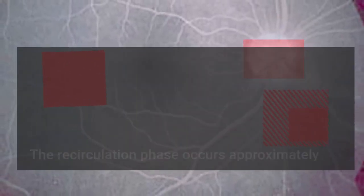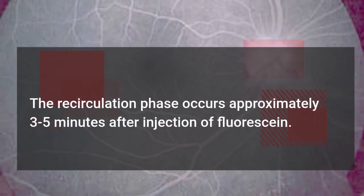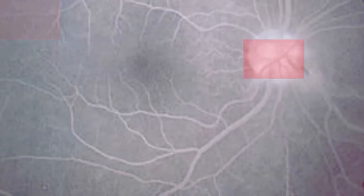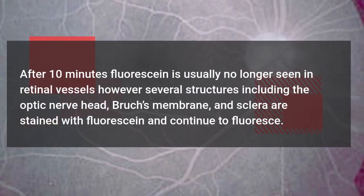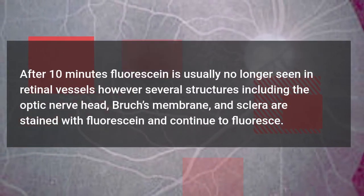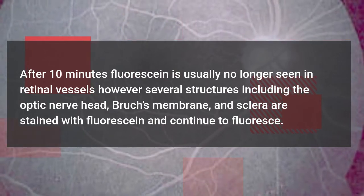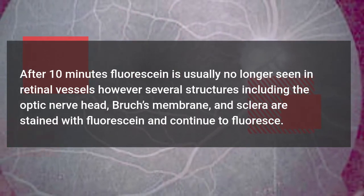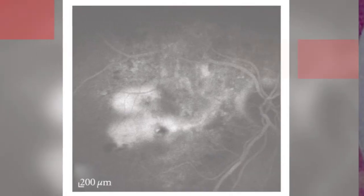The recirculation phase occurs approximately 3 to 5 minutes after injection of fluorescein. After 10 minutes, fluorescein is usually no longer seen in retinal vessels; however, several structures including the optic nerve head, Bruch's membrane, and sclera are stained with fluorescein and continue to fluoresce.